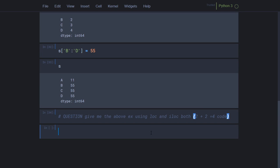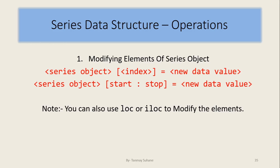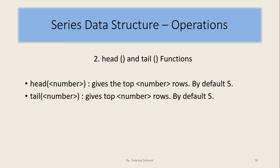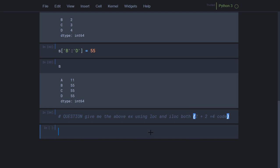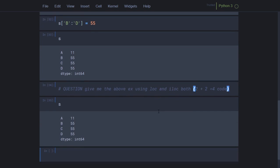Now let us move to our second point: head and tail functions. Head is used to find the top-most rows — by default five. Let us create another series to demonstrate this.